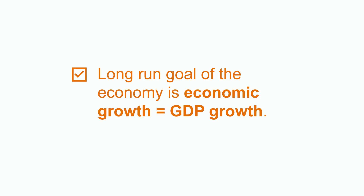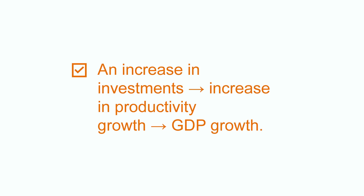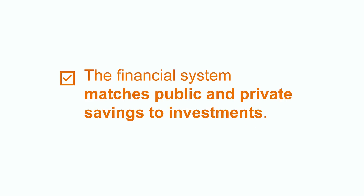A quick recap. The most widely recognized aim of the economy is stable economic growth, by which we mean an increase in the size of the economy, or GDP. An increase in investments leads to an increase in productivity that results in GDP growth. In our model, investments are coming from savings through the financial system. The financial system matches public and private savings to investments. Today, we talked about economic growth, how it can be fostered, and what the role of the financial system is. I hope you enjoyed today's video. Thank you so much.